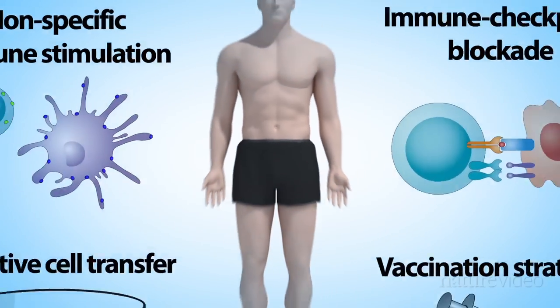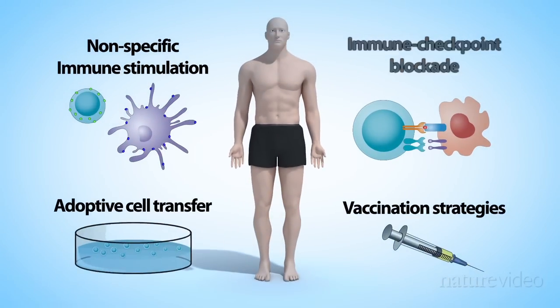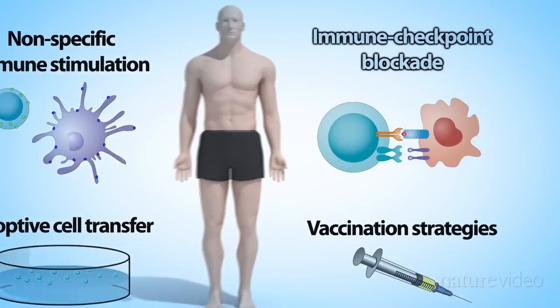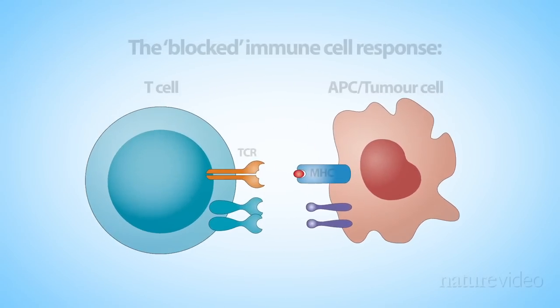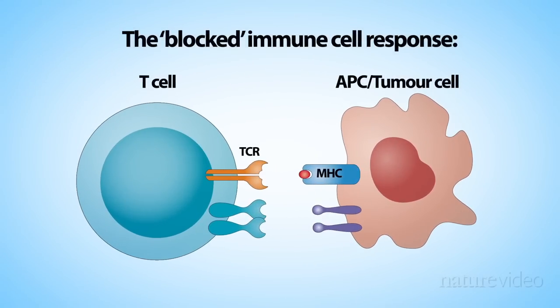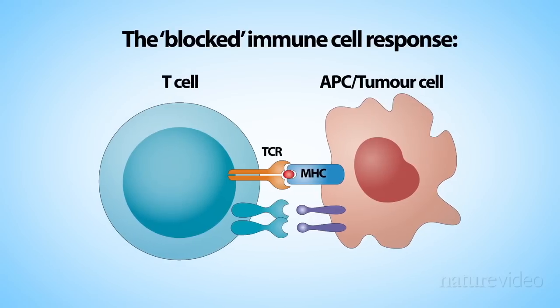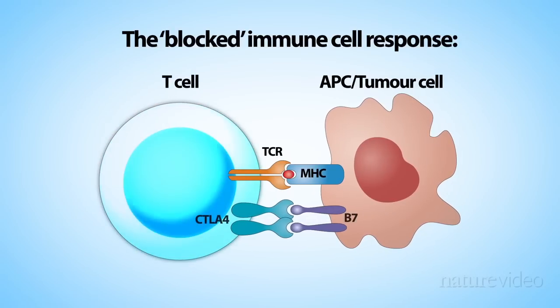Non-specific immunity can also be achieved by removing so-called immune checkpoint blockades. These blockades normally dampen down the immune response to prevent collateral damage to healthy tissue. But to fight cancer, scientists need to remove some of these blockades to make the immune response stronger.